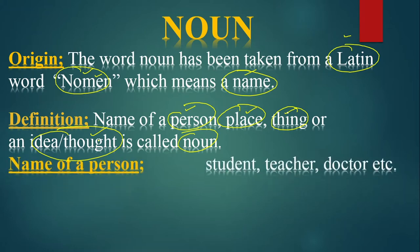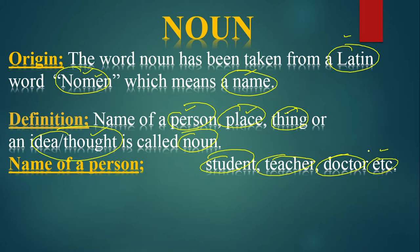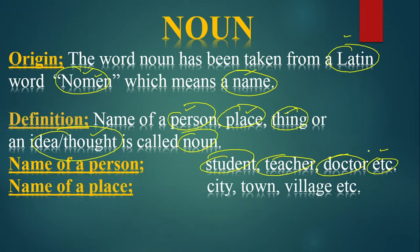Noun is the name of a person — for example, student, teacher, doctor, etc. These are names of persons. If I say 'student,' your mind immediately clicks that the one who learns is called a student. 'Teacher' — the person who teaches. 'Doctor' — the one who treats. So student, teacher, doctor are all names of persons.